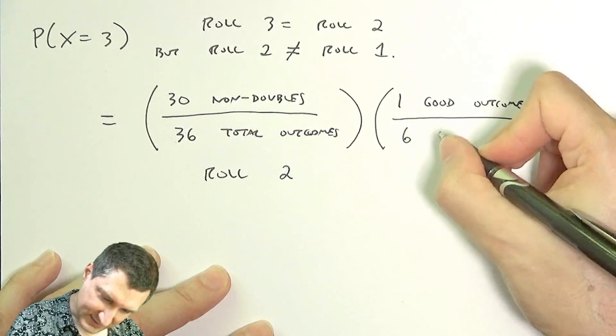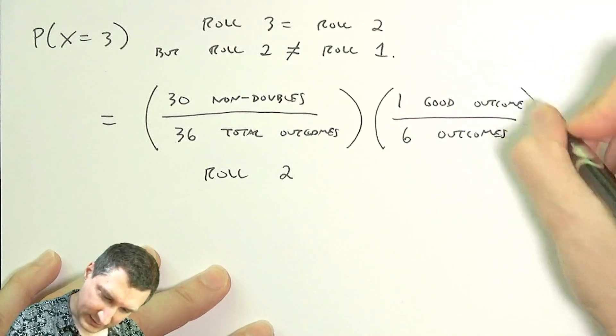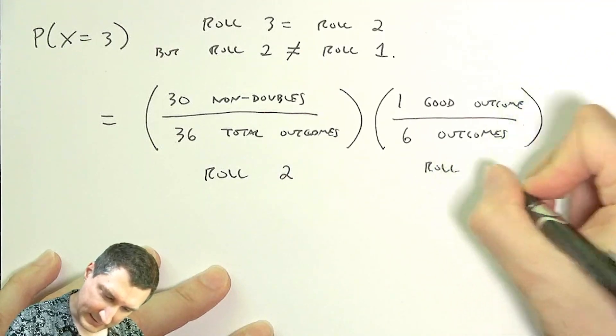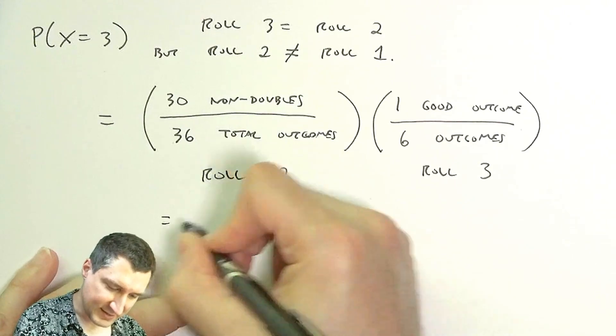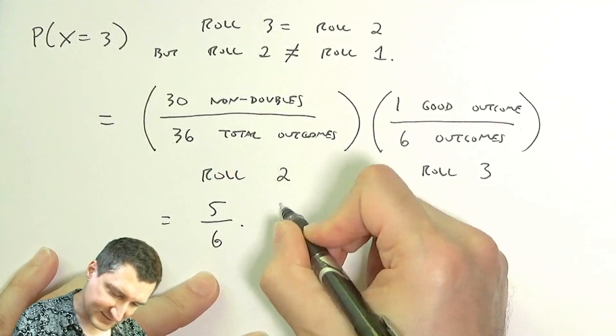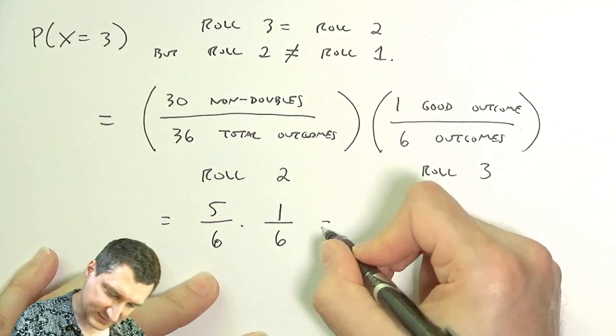And then on roll 3 I have one good outcome over six outcomes. This is like saying that whatever I saw on roll 3 matches what I saw on roll 2. So here I can say that the result is 5/6 times 1/6, which is 5/36.